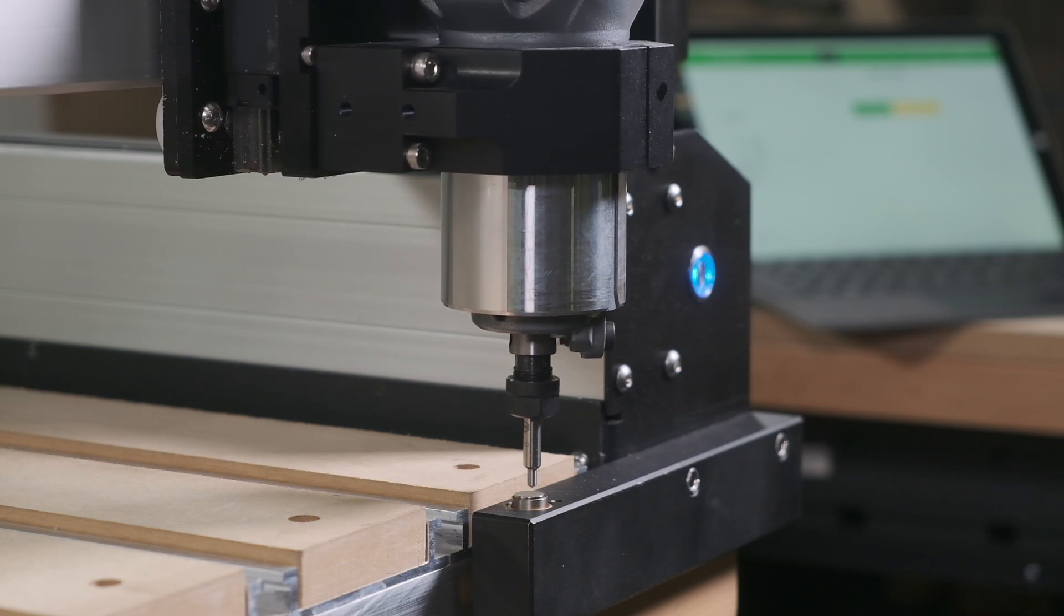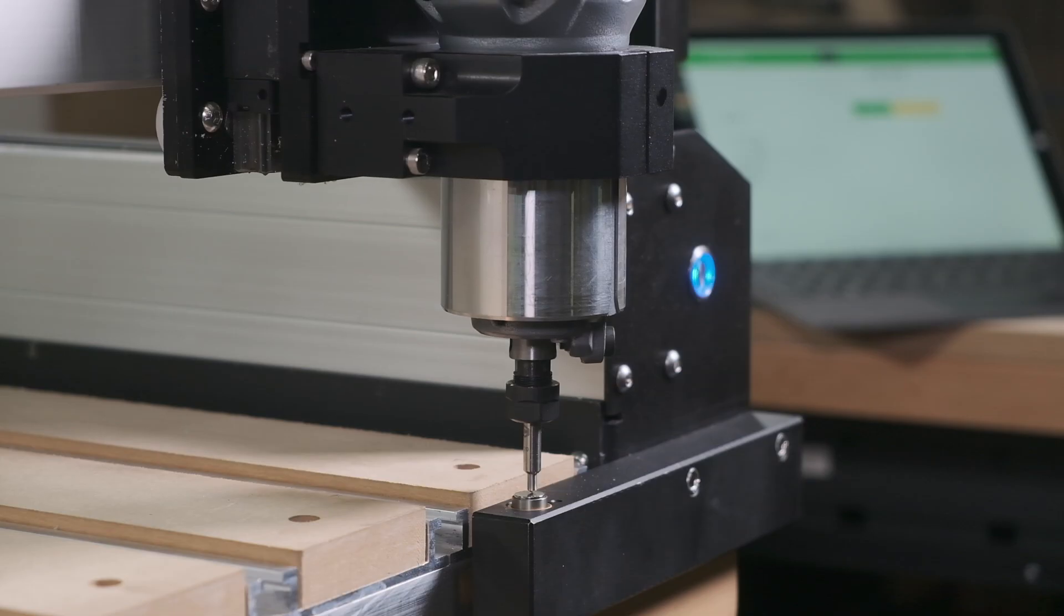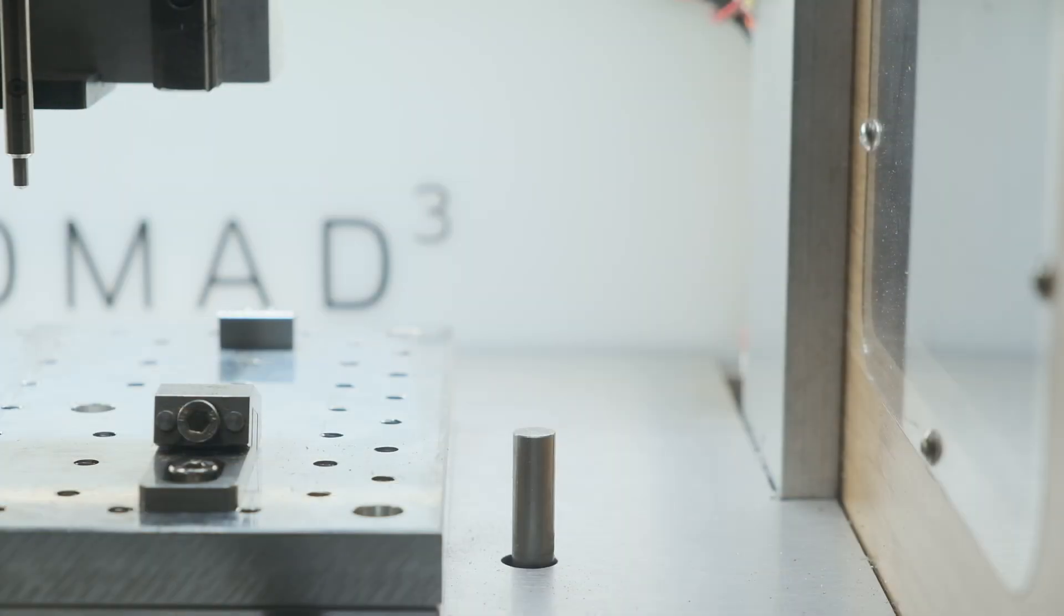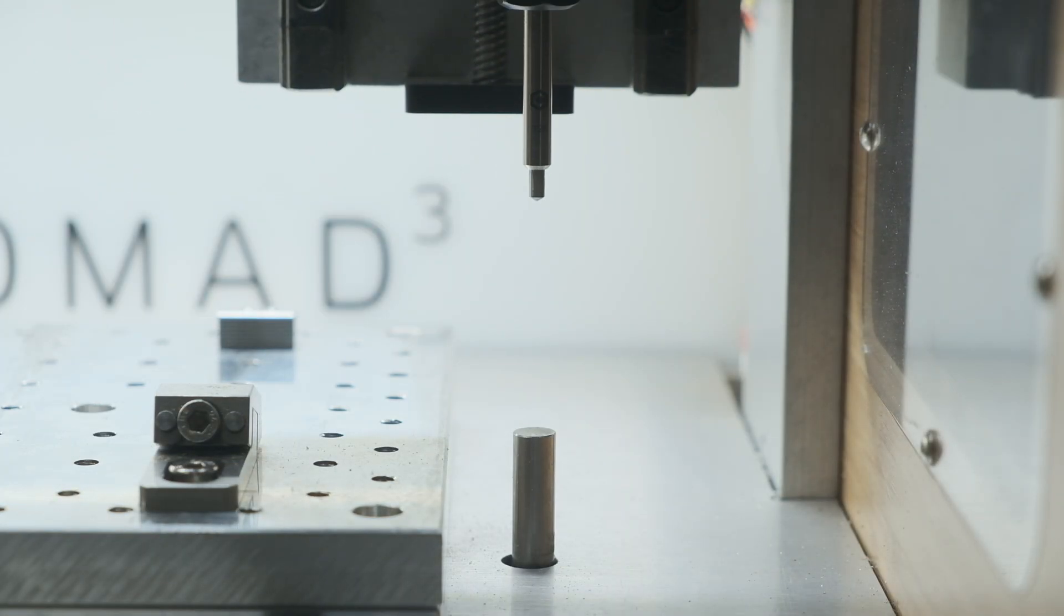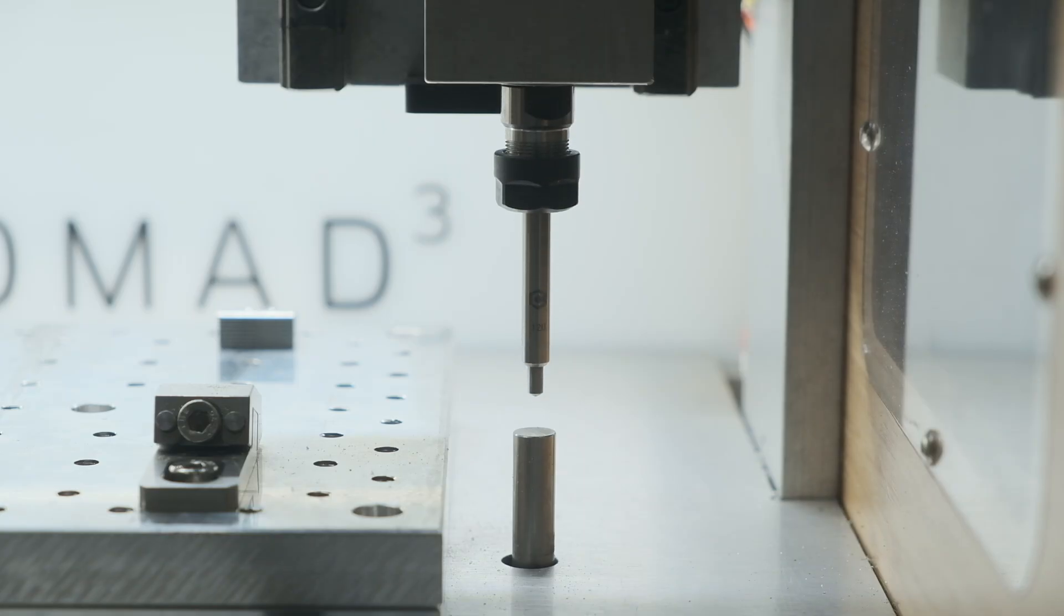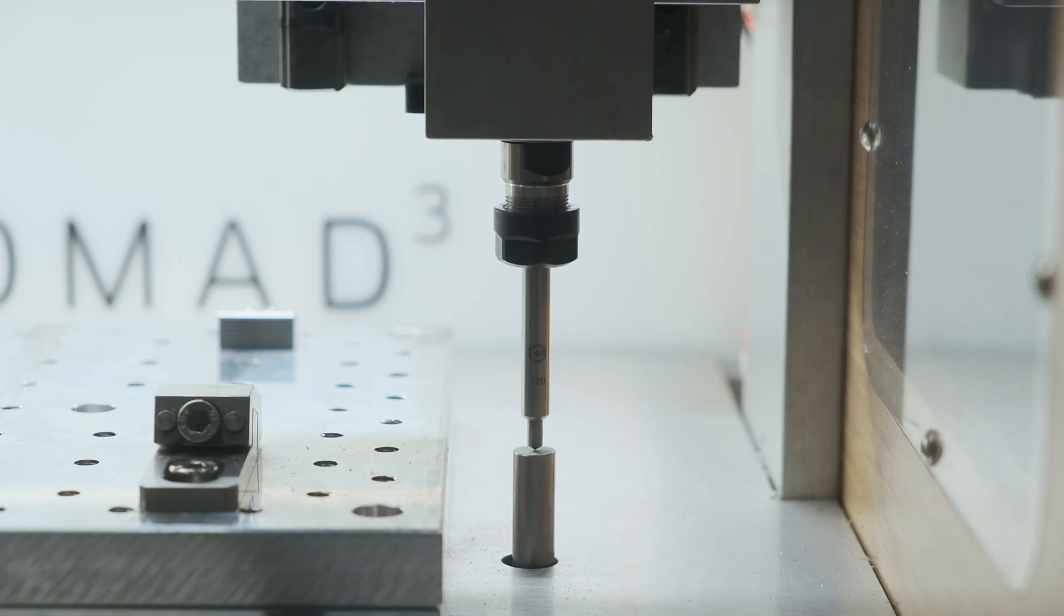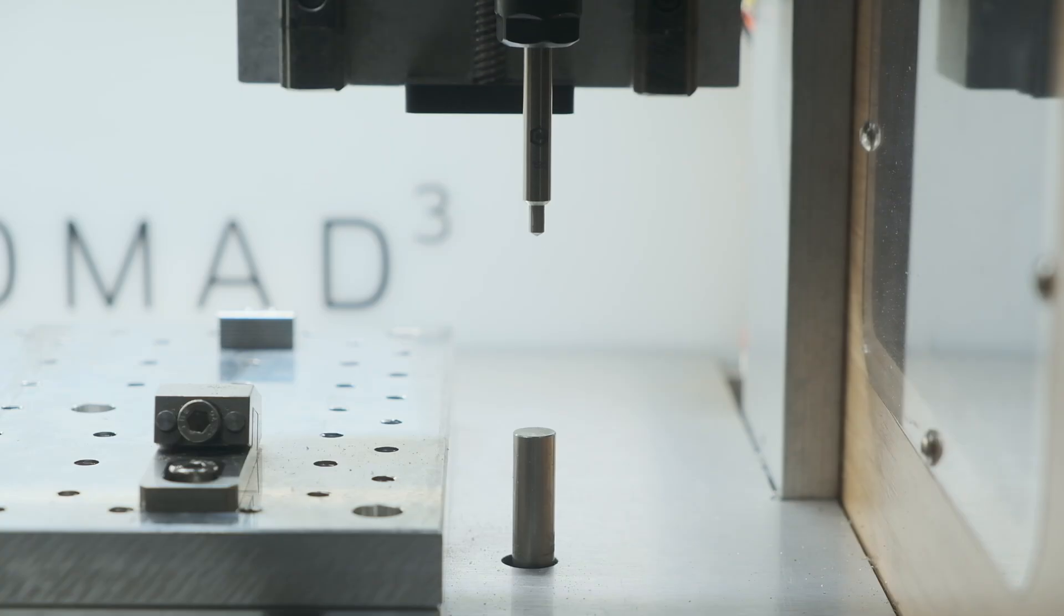But if you'd rather not bother doing that or are unable to do so like on the Nomad, then you should check to make sure that the spring force of the drag engraver is higher than that of the tool probe. The switch on your Bit Setter should trigger before the drag engraver begins to compress.